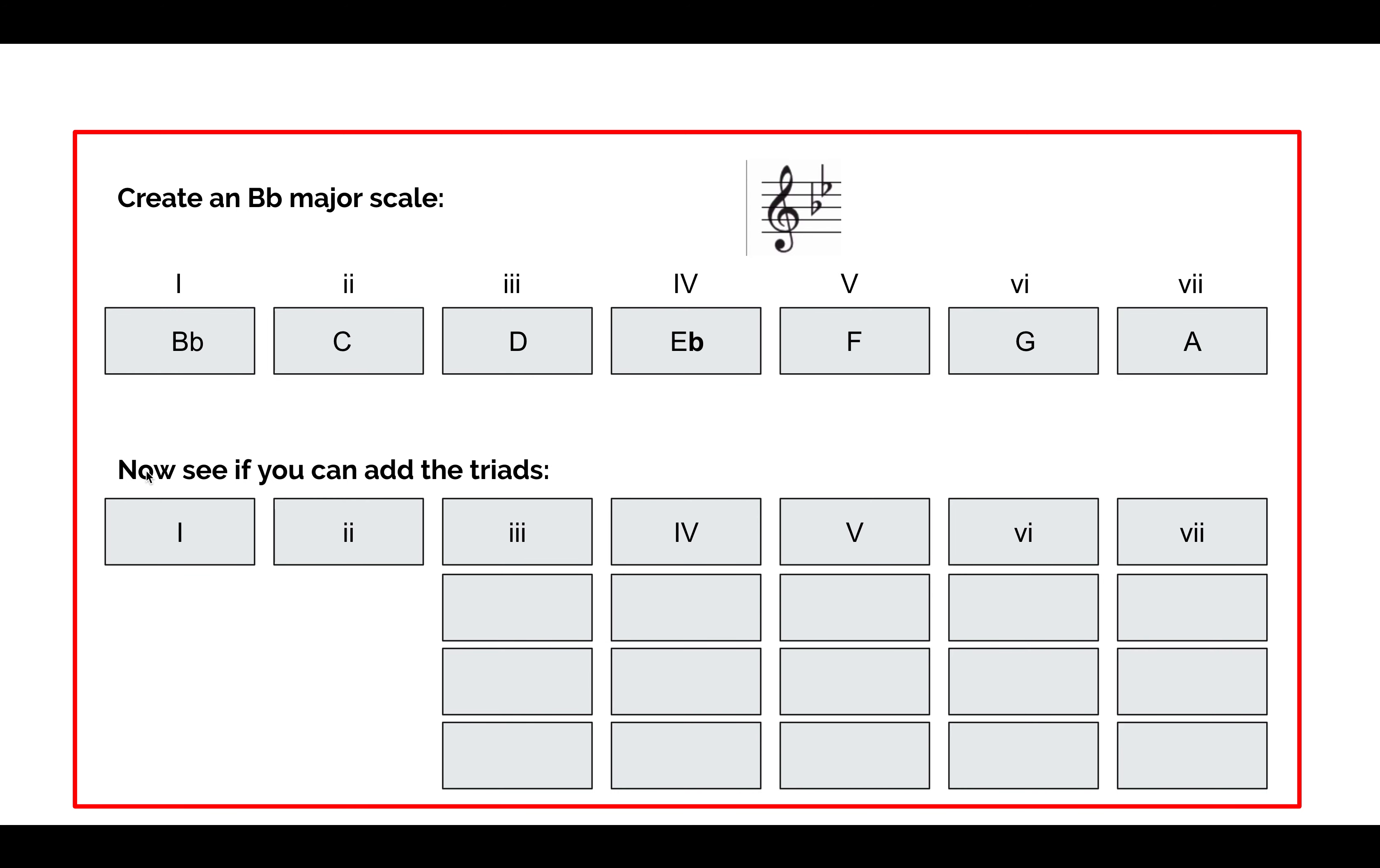Now, if we get on to moving to the triads, we've got chord I here, begins in a B-flat. Follow exactly the same principle. We skip, we play, that becomes a D. We skip, we play, that becomes an F. So, triad I, or chord I, is B-flat, D, and F.